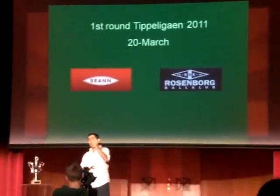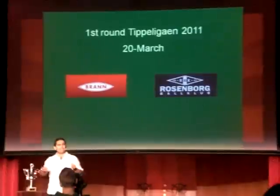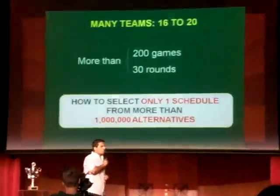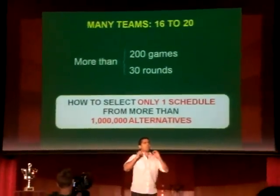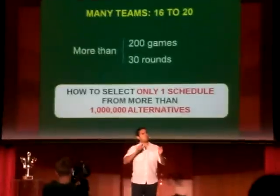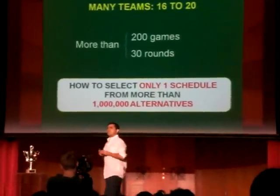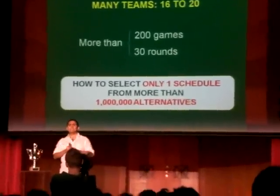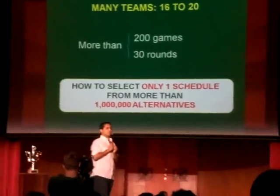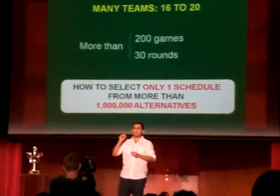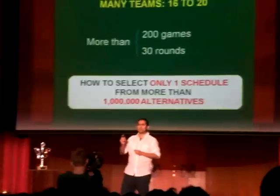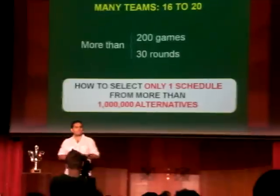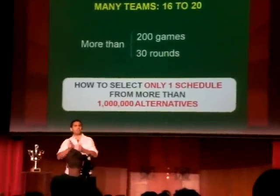If there were only two or a few teams in the league, the problem with scheduling would be quite easy. But in practice, most football leagues around the world have many teams — normally between 16 and 20. So there are about 200 games to schedule in about 30 rounds in the calendar, and the problem becomes much harder. This is the challenge that at the beginning of the season the managers of the league need to solve: selecting only one schedule out of millions of alternatives.